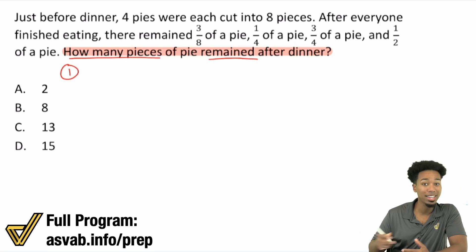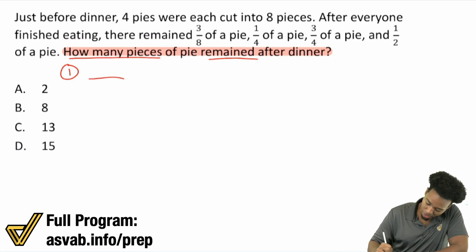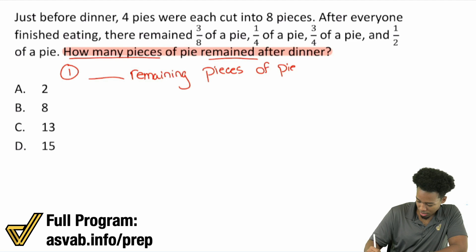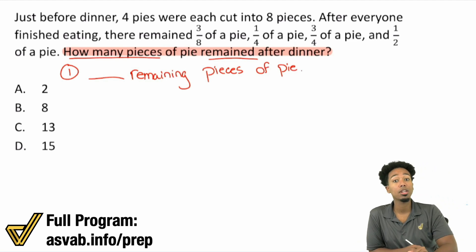So what do we want? First step, what do we want? We want blank remaining pieces of pie. Okay, sounds good. We're just looking for blank remaining pieces of pie.